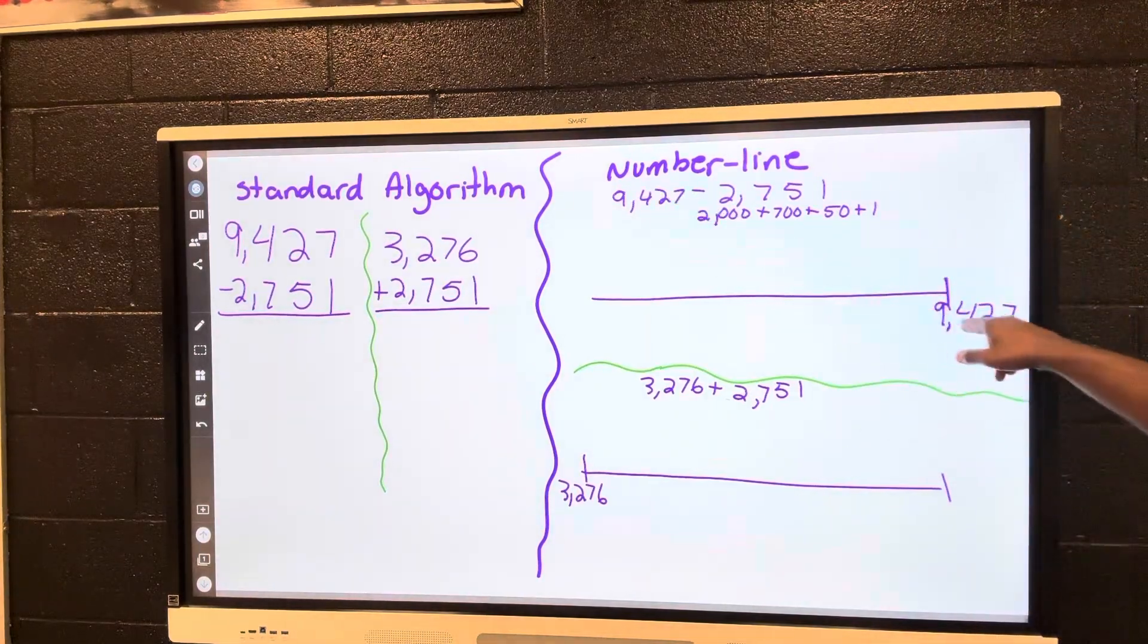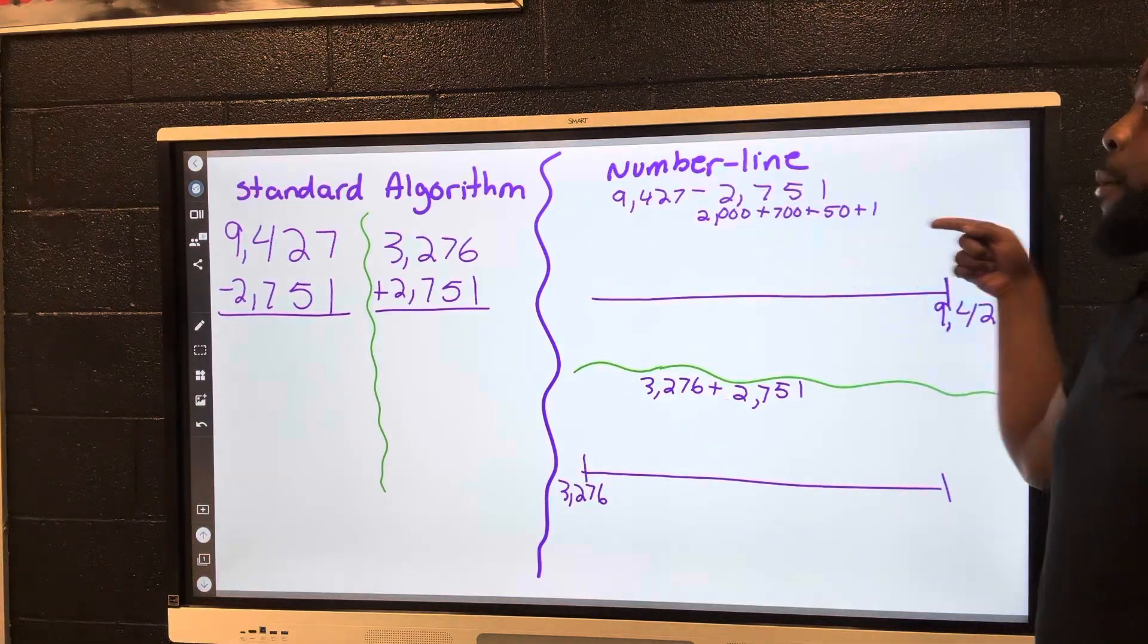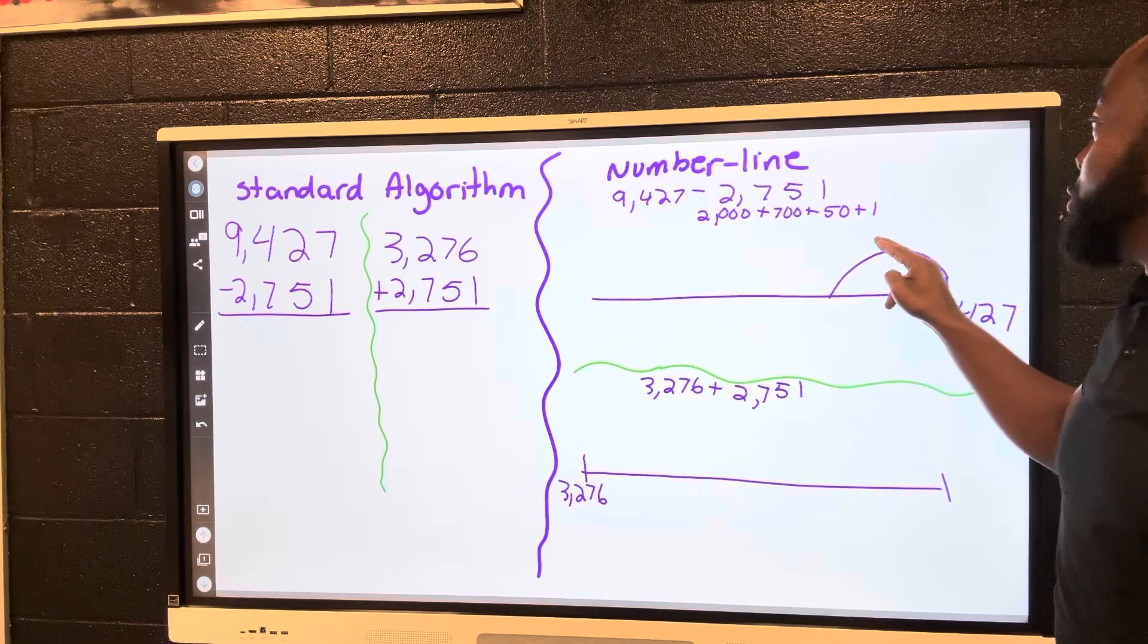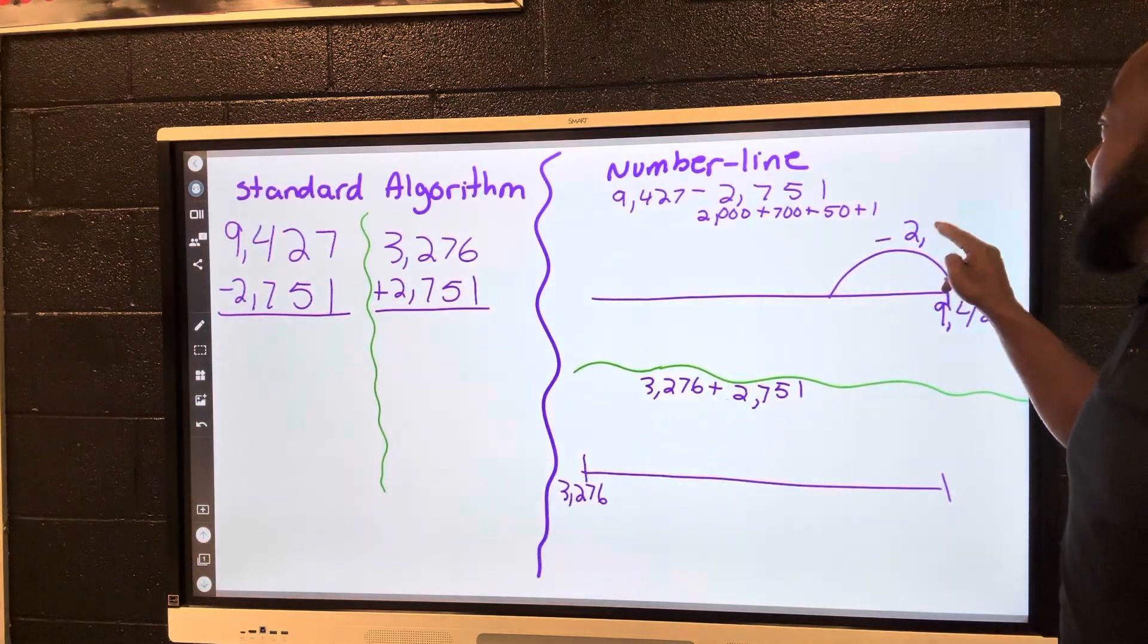Since I'm subtracting, I'm going backwards. We're going to go one loop which represents minus 2,000. So we're subtracting based on place value.